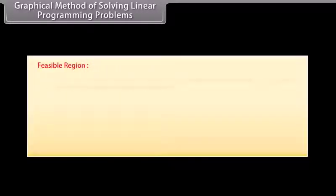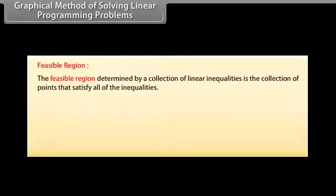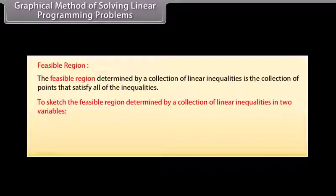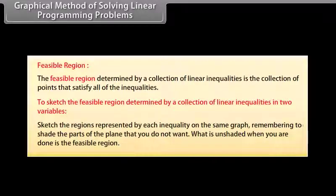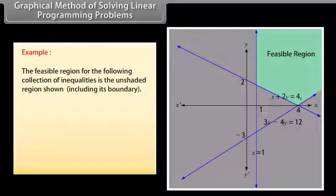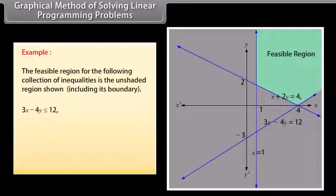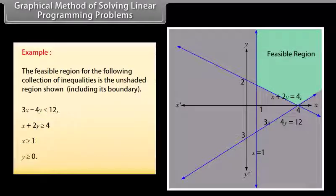Graphical method of solving linear programming problems — Feasible region: The feasible region determined by a collection of linear inequalities is the collection of points that satisfy all the inequalities. To sketch the feasible region, sketch the regions represented by each inequality on the same graph, shading the parts of the plane you do not want. What is unshaded when you are done is the feasible region. Example: The feasible region for 3X minus 4Y ≤ 12, X plus 2Y ≥ 4, X ≥ 1, Y ≥ 0 is the unshaded region shown, including its boundary.